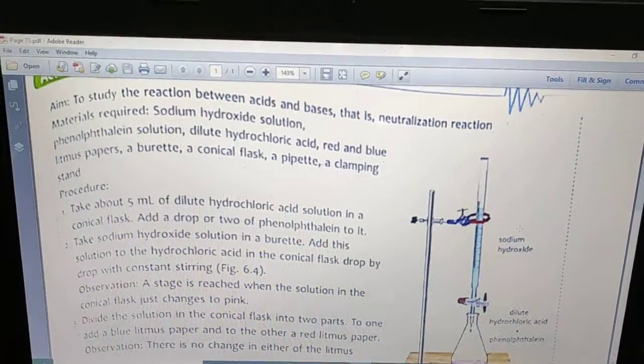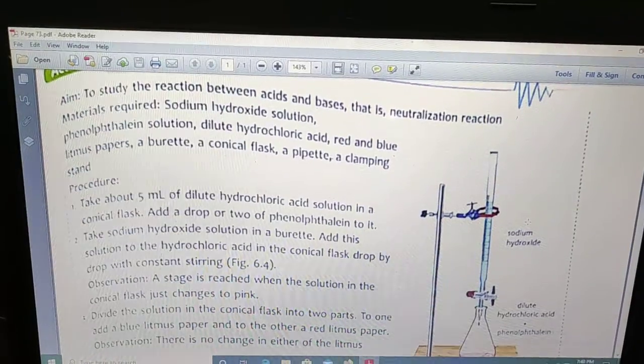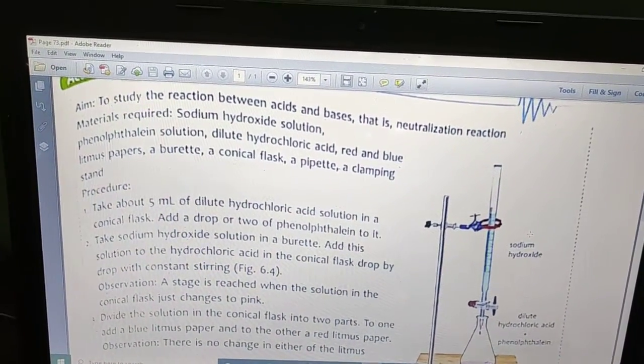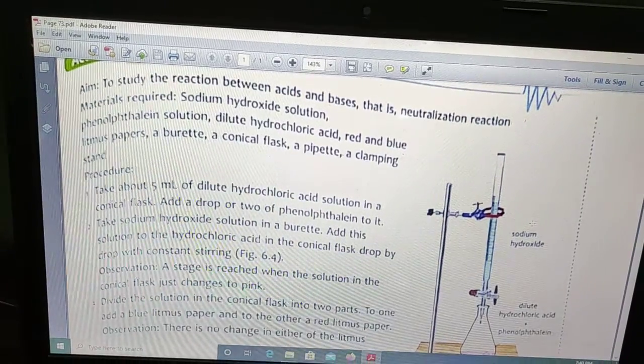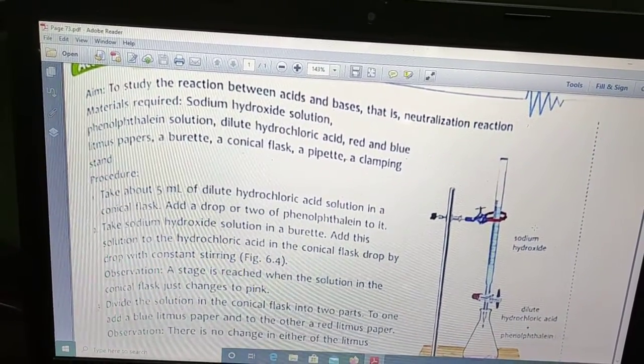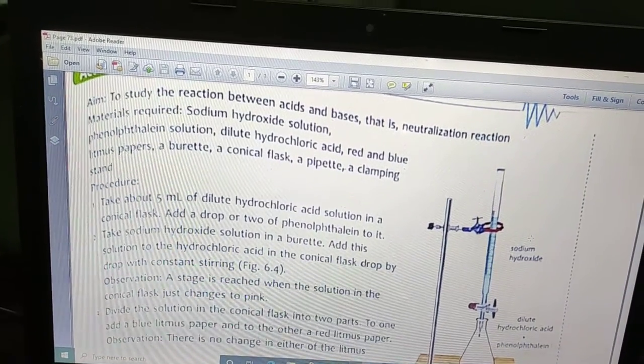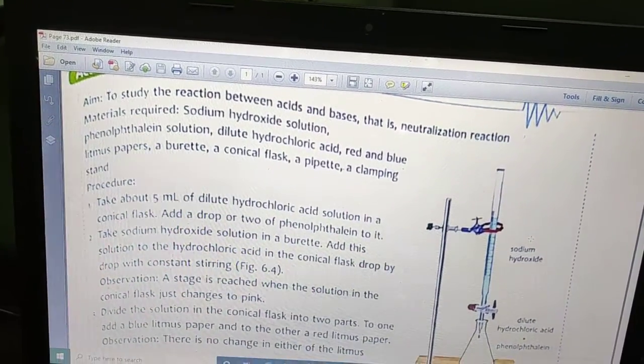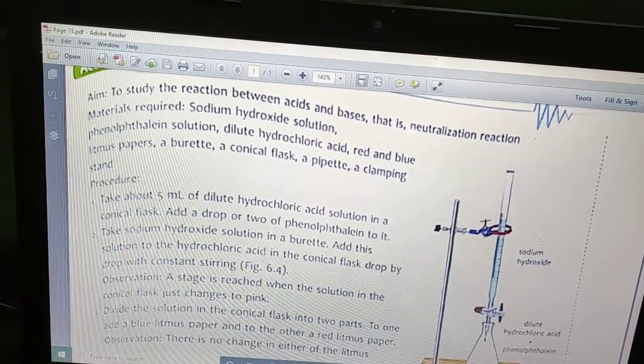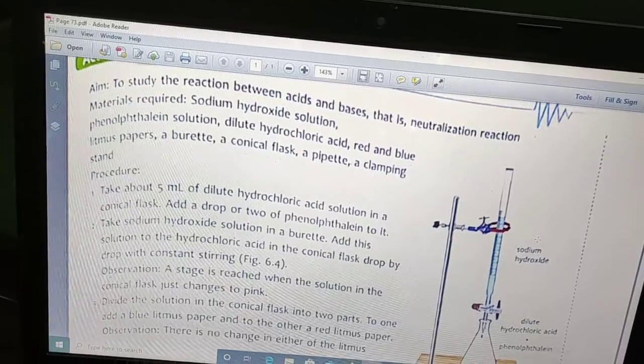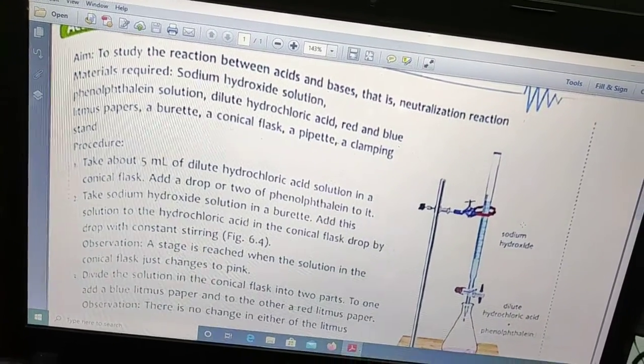Hello students, in our last class we discussed double decomposition reaction or double displacement reaction, and we have seen the two types of double displacement reaction: precipitation and neutralization reaction. We have seen examples as well. Now today we are going to see how a neutralization reaction takes place. This is an activity.